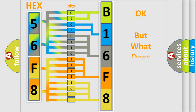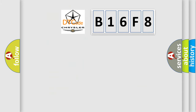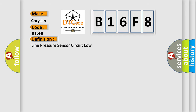We now know in what way the diagnostic tool translates the received information into a more comprehensible format. The number itself does not make sense to us if we cannot assign information about what it actually expresses. So, what does the diagnostic trouble code B16F8 interpret specifically for Chrysler car manufacturers? The basic definition is: Line pressure sensor circuit low.